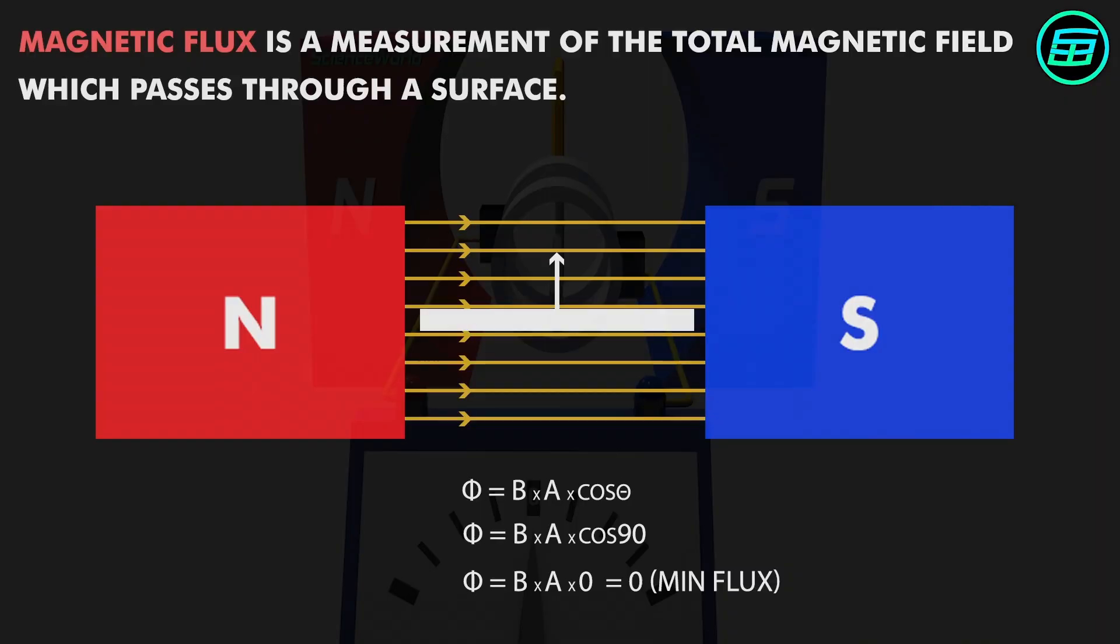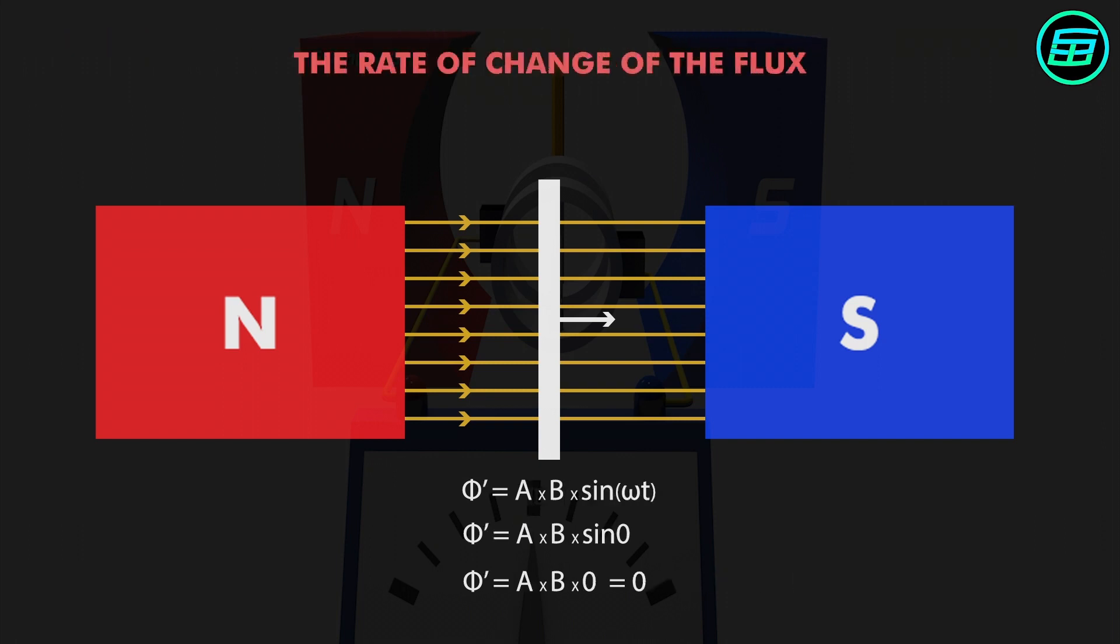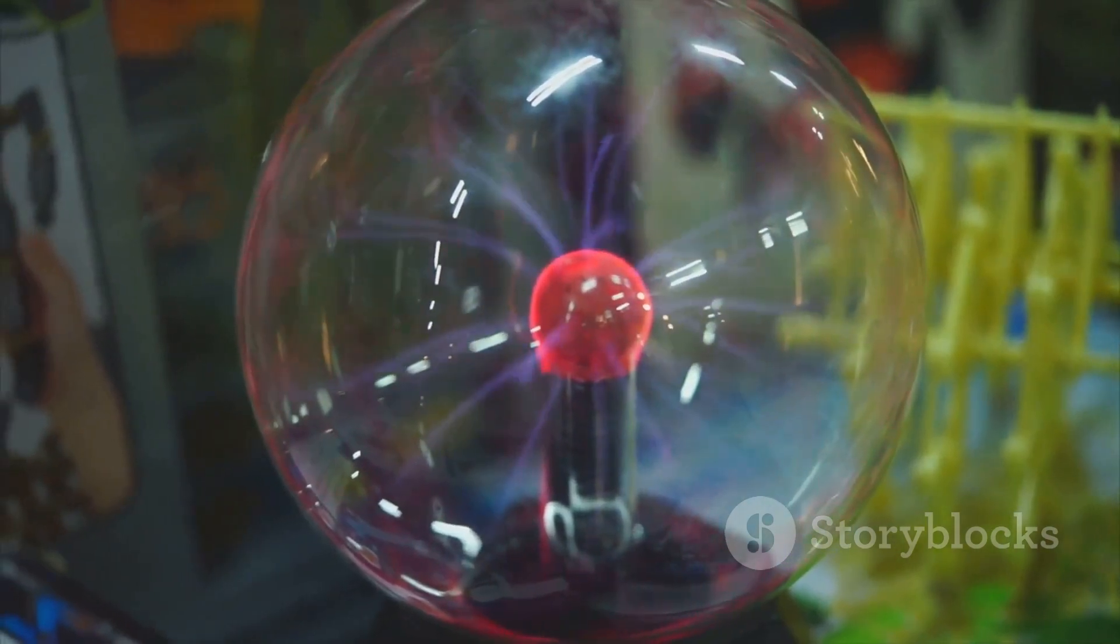In essence, electromagnetic induction is the production of an electric current across a conductor moving through a magnetic field. The story begins in the early 19th century with a man named Michael Faraday. Faraday discovered that when he moved a magnet in and out of a coil of wire, it induced an electric current in the wire. This was a groundbreaking revelation at the time, and it marked the birth of electromagnetic induction.